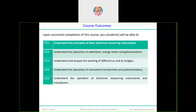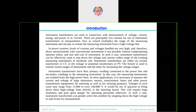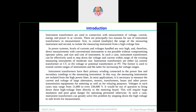Upon successful completion of this module, we will be able to develop an understanding of the operation of instrument transformers and potentiometers. Under today's session we are going to consider instrument transformers, and more specifically we will cover current transformers. Instrument transformer is a combination of the current transformer — in short called CT — and the potential transformer — in short called PT. Both are instrument transformers individually.